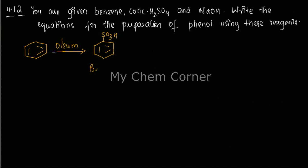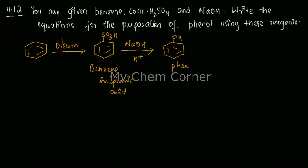This on treatment with NaOH and H+ will give OH, which is phenol. So again, it's a two-step process where benzene treats with oleum to give benzene sulfonic acid, and further on reaction with NaOH and H+ will give phenol.